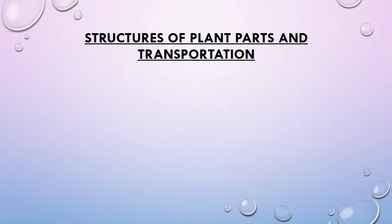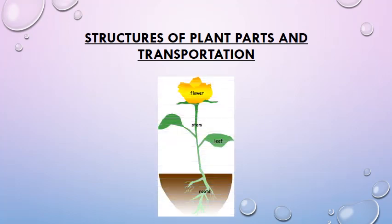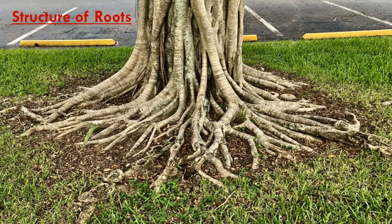Now we will discuss structures of plant parts and transportation. The three main parts of a plant are root, stem, and leaves. Basic parts include flowers, fruits, and seeds. Nature has made the plant parts in such a way that their structures permit the movement of materials. First, we will discuss the structure of roots.